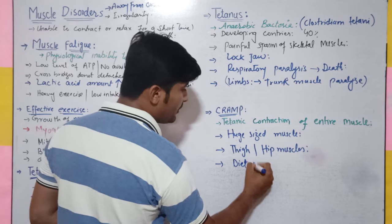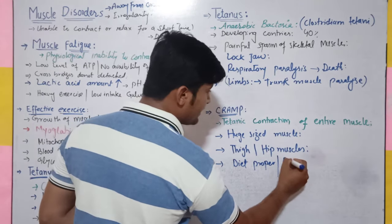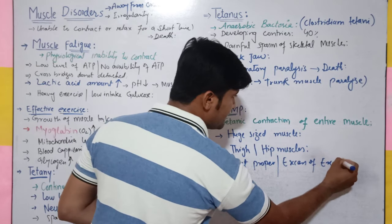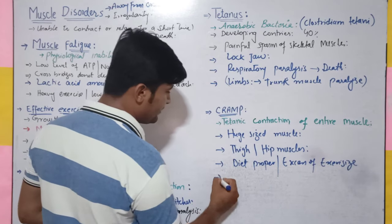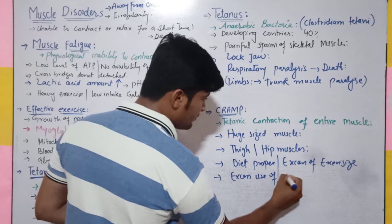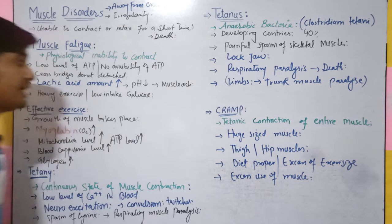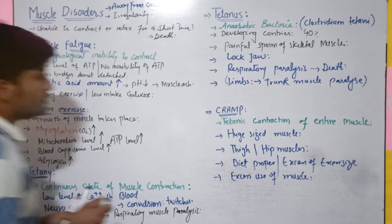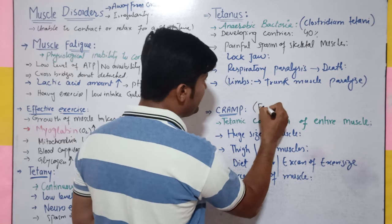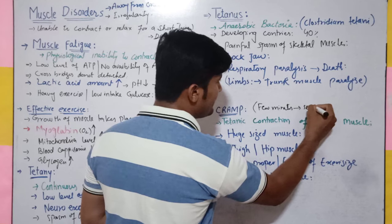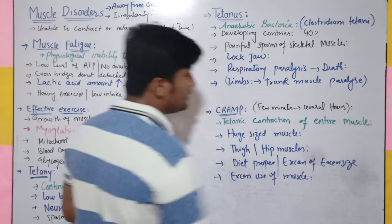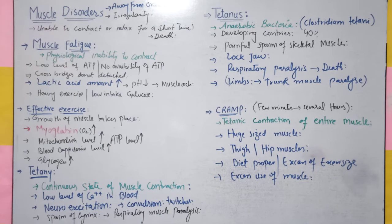Yeh kyon hota hai? Ya to diet proper nahi hoti, ya phir excess of exercise ya excess use of muscle — jab insan yeh kar leta hai to cramping badh jaati hai. Iska duration few minutes se lekar several hours tak rehta hai. Yeh mostly sportsmen mein — jo cricket khelate hain unhe bhi — yeh problem hoti hai. Cramping ka time mainly raat ka hota hai — jab insan so raha hota hai to in muscles mein yeh problem generate ho jaati hai.